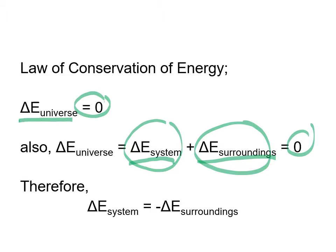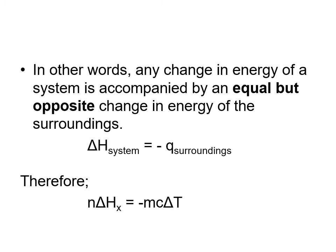Whatever amount of energy moves out of the system has to be the amount gained by the surroundings, or vice versa. The change in energy of the system is equal but opposite to the change in energy of the surroundings. What the system loses, the surroundings gains, and whatever the surroundings gain, the system will lose.